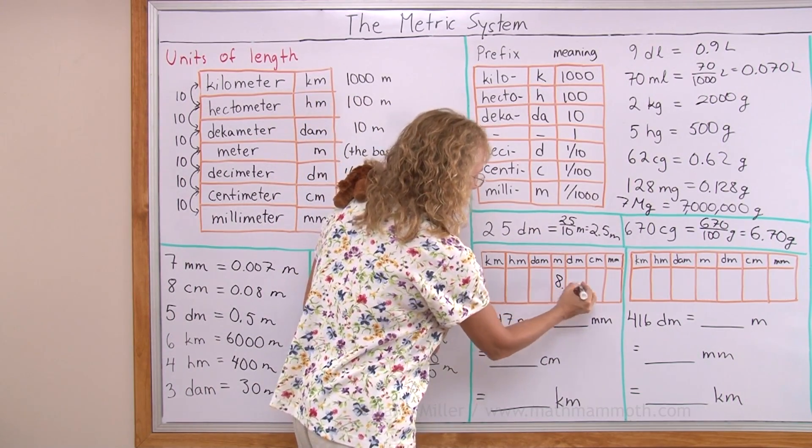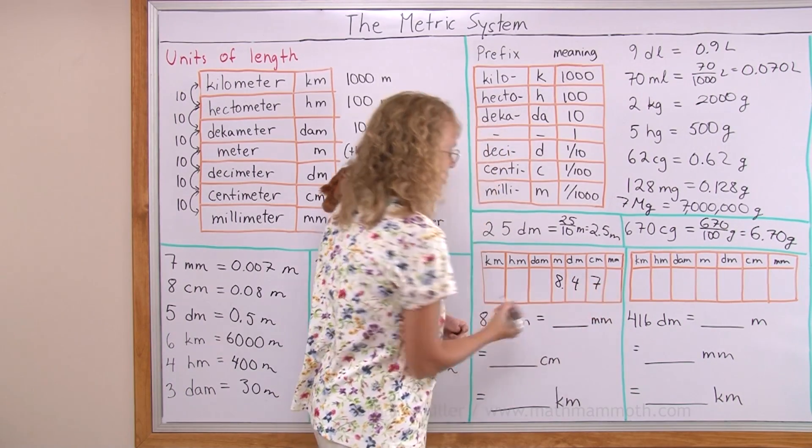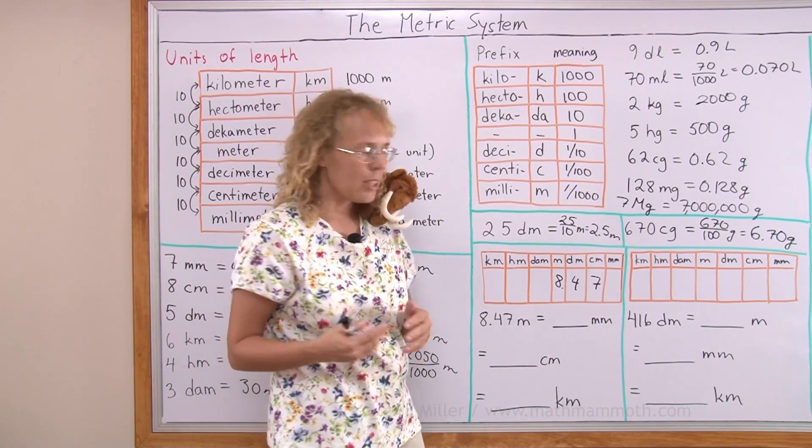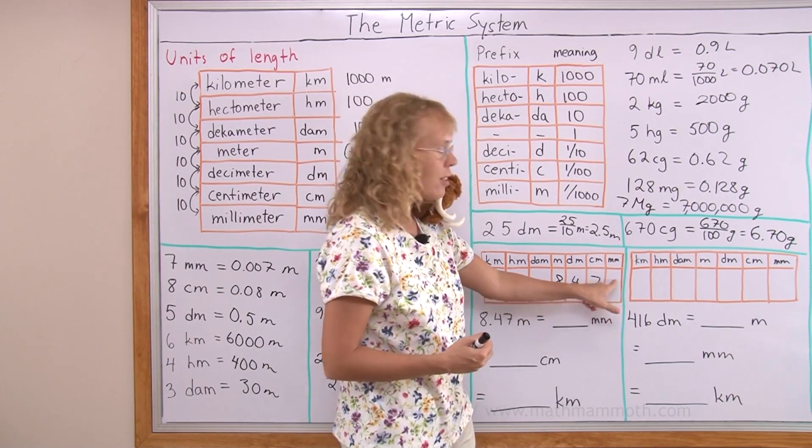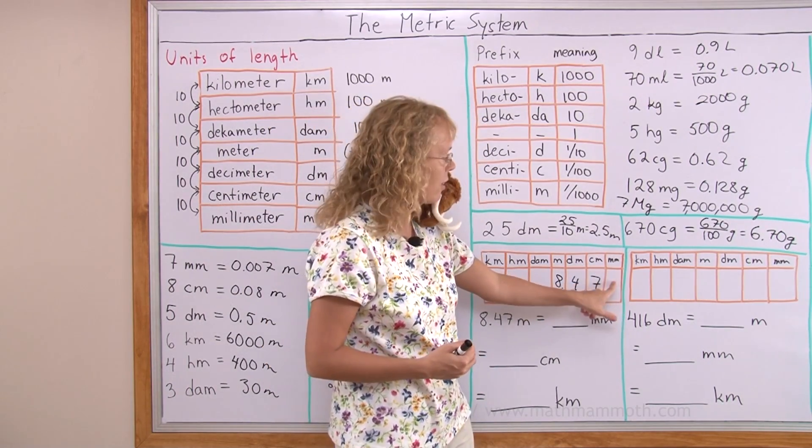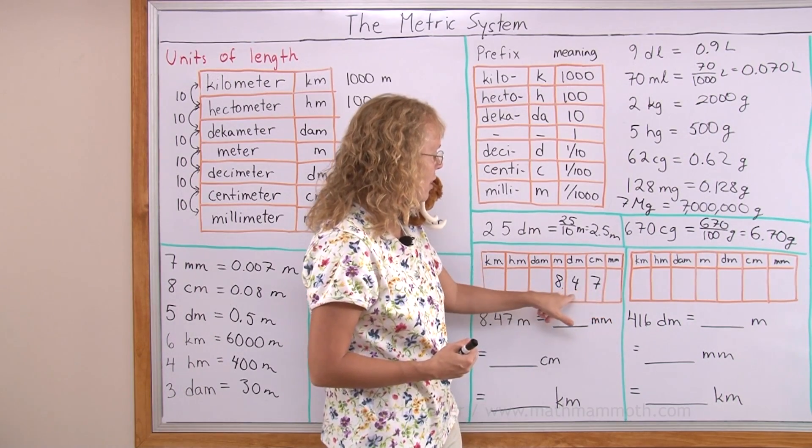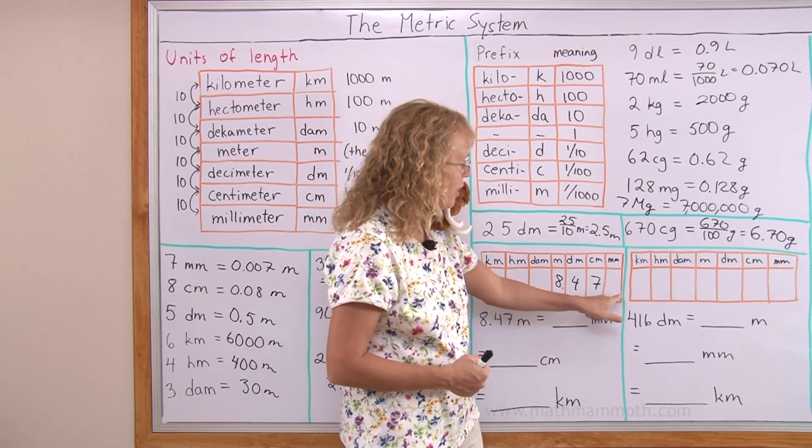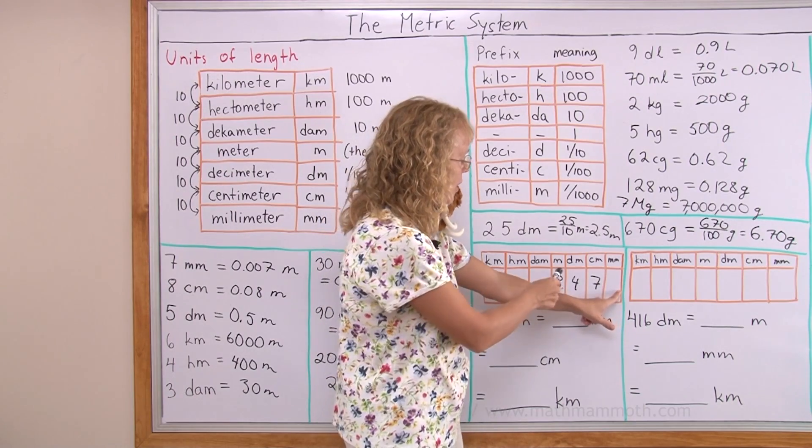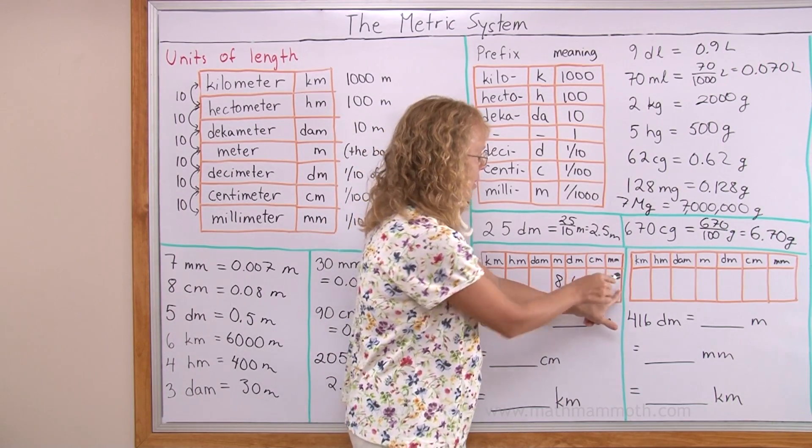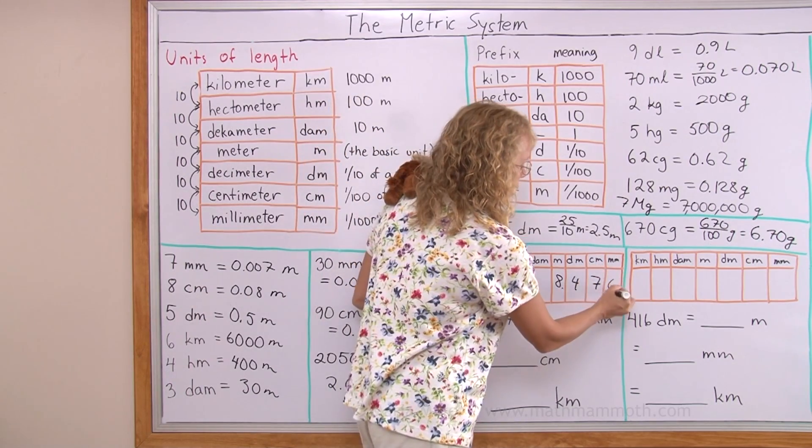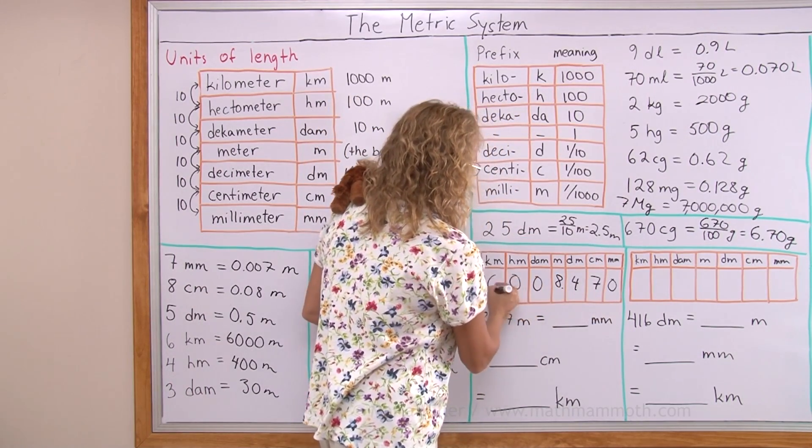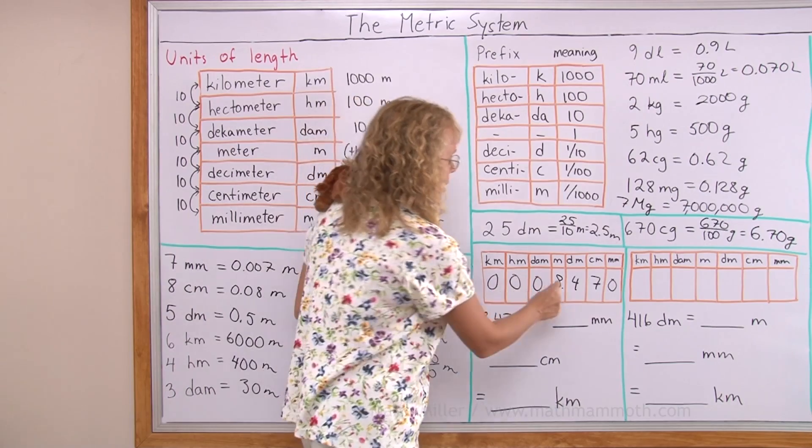Now when I convert it to millimeters, I will read it here as if the basic one's place was here. This was ones, tens, hundreds and so on. It is as if the decimal point moved here after millimeters. So I will see it would be eight thousand four hundred seventy. And when I'm doing the conversion, I need to often put zeros in these other empty places.